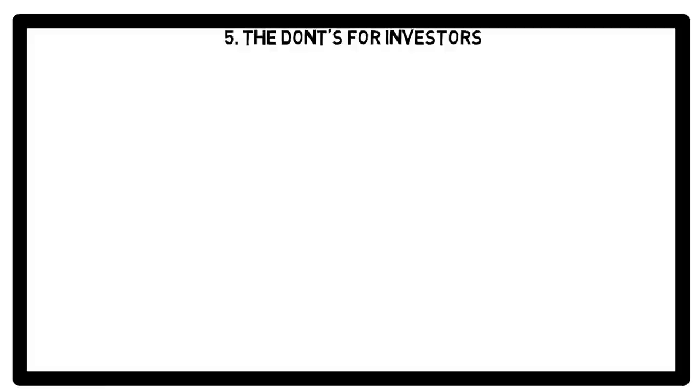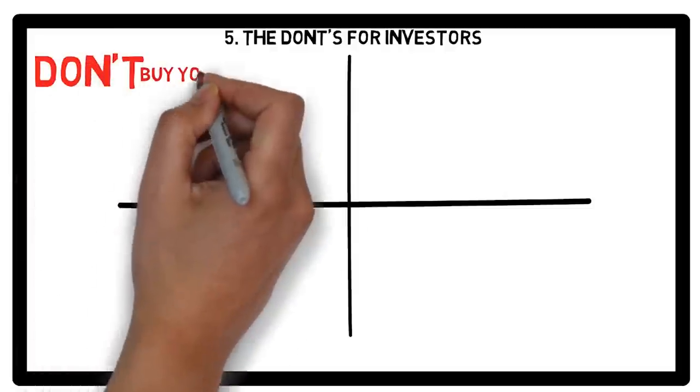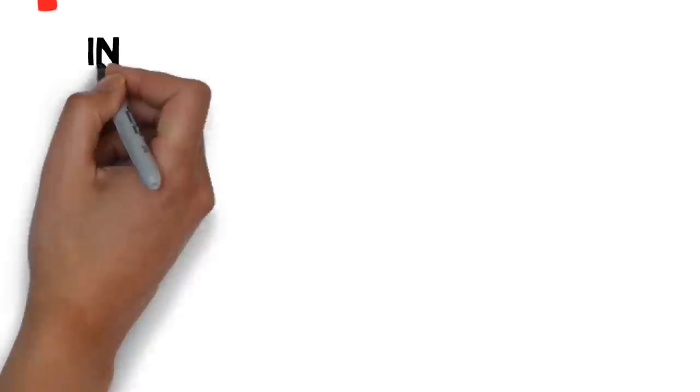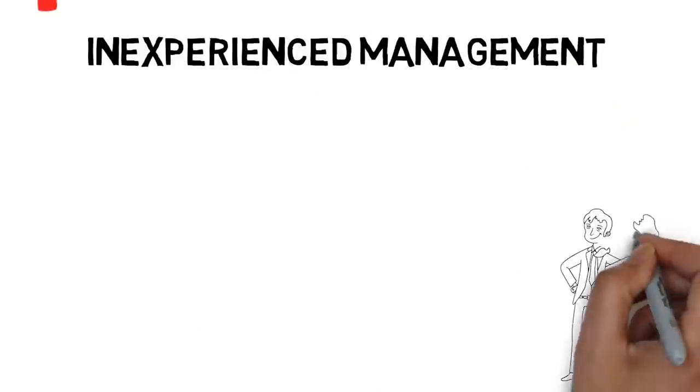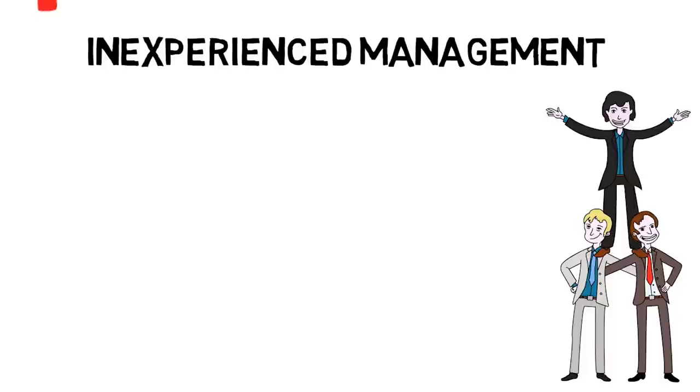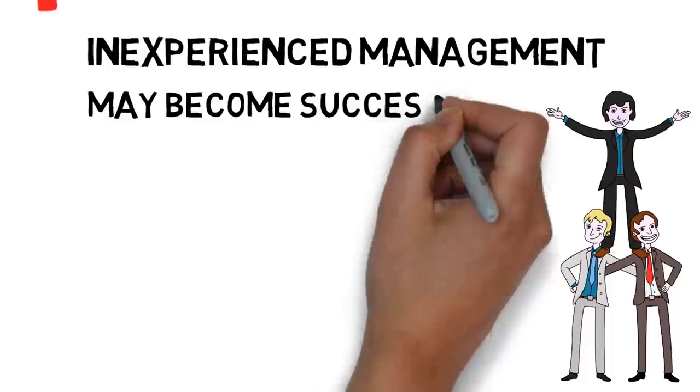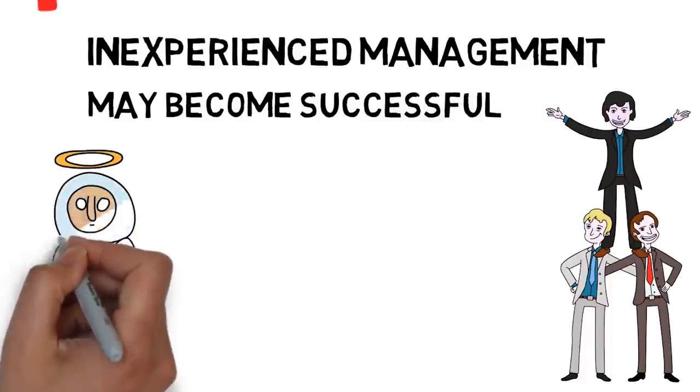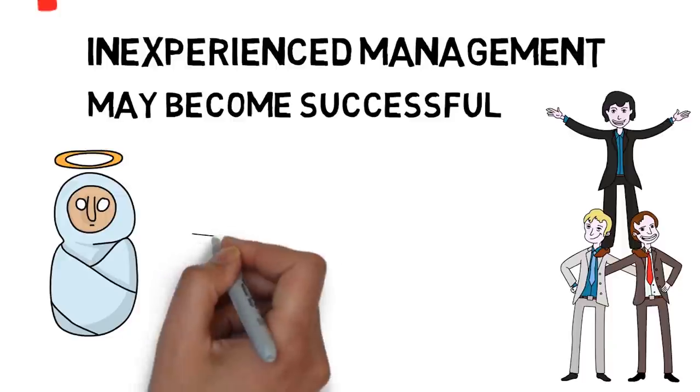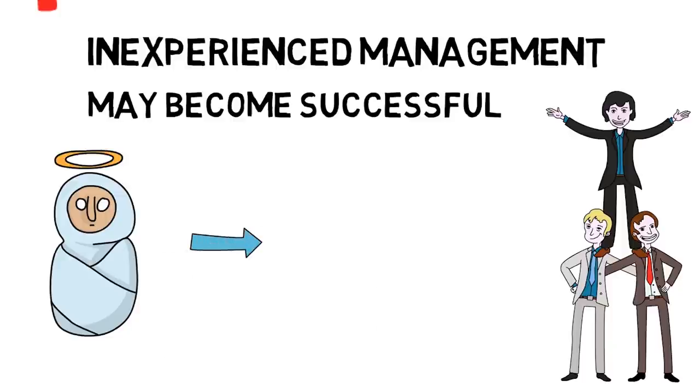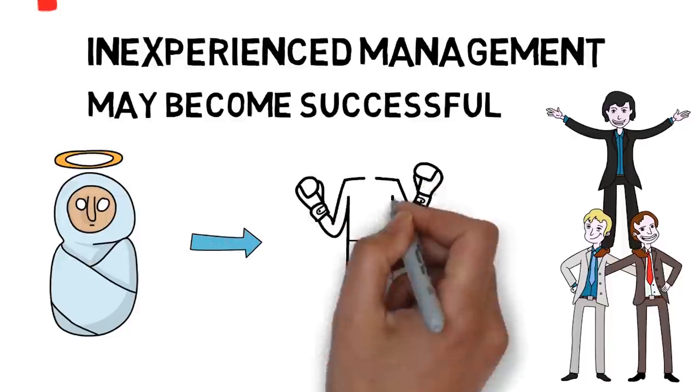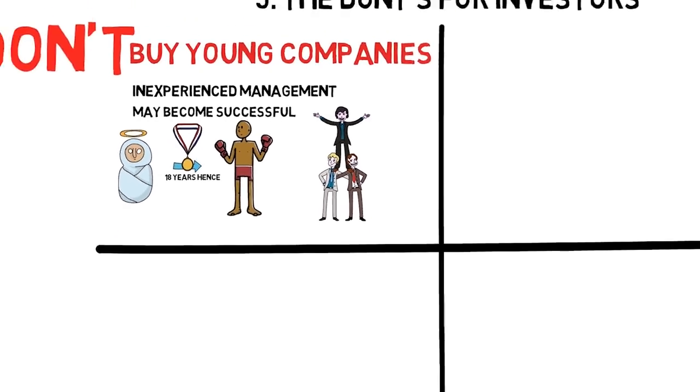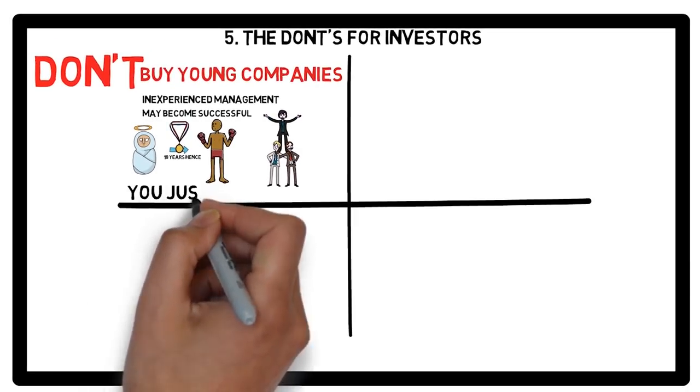Lesson number five: The don'ts for investors. Don't buy young companies. The young companies have no experience. The management is new, though their aspirations are big, but anyone who starts a business has big aspirations. These young companies may become the next big thing, but guessing for such a thing to happen is gambling. It is just like predicting whether a newborn baby will win a national boxing medal when he is 18. You may get it right, but that does not mean that your insight is superior, it just means that you were lucky.